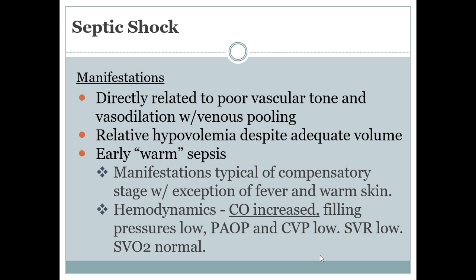In terms of hemodynamics, you'll have cardiac output that's increased. Filling pressures are low — your PAOP and CVP are low. You'll have tachycardia, warm flushed skin, bounding pulses, and be febrile. Your systemic vascular resistance is low because of this profound systemic vasodilation.